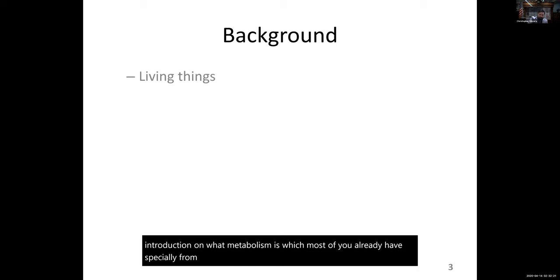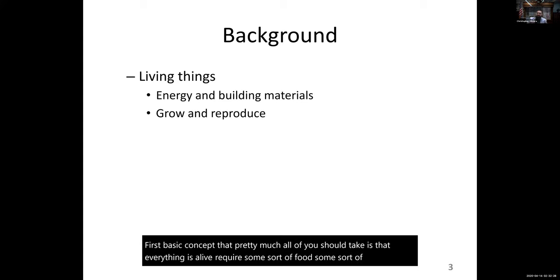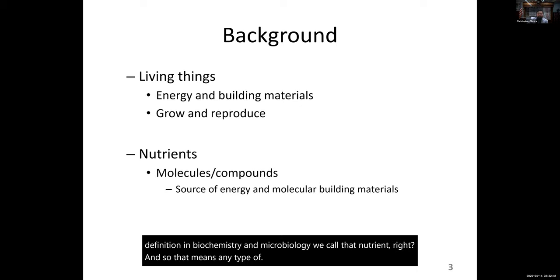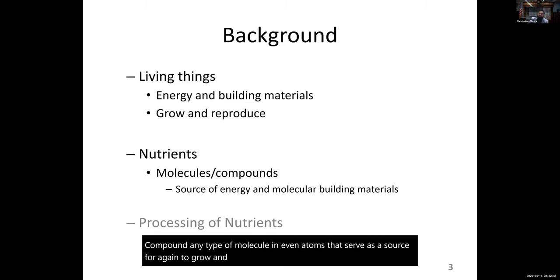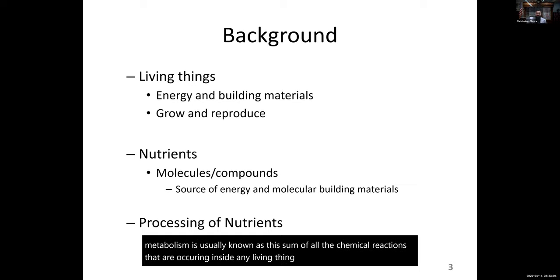The first basic concept is that everything alive requires some sort of food, some sort of nutrient — something to grow and typically make more of themselves. In biochemistry and microbiology, we call that a nutrient: any type of compound, molecule, or even atom that serves as a source to grow and reproduce. This subject deals with the ability to process those nutrients, and we call that metabolism — the sum of all chemical reactions occurring inside any living thing, as opposed to just what you do when you eat.